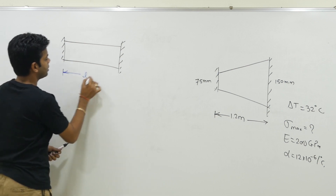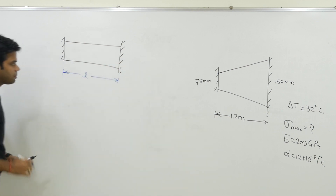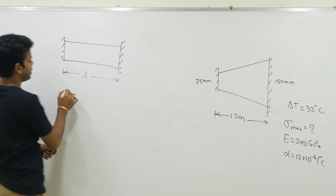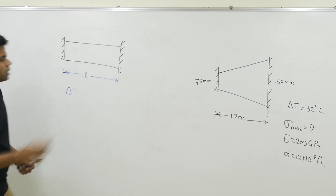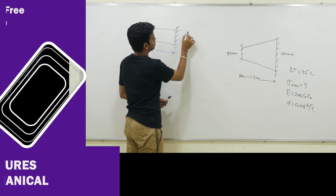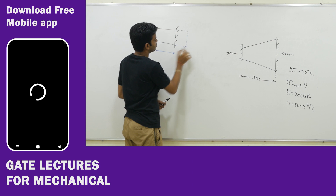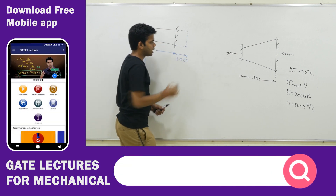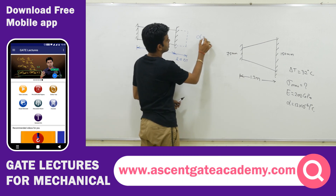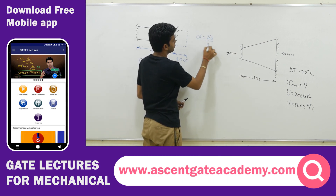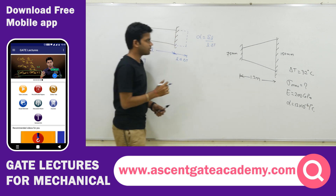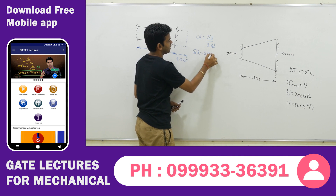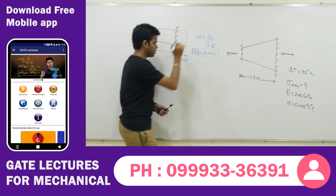Let's suppose the length of this bar is L and the temperature increase is ΔT. If it was free to expand, then the total increase in length is L·α·ΔT. Alpha is the coefficient of thermal expansion, which equals change in length per unit length per degree rise in temperature. So the total ΔL due to ΔT degrees centigrade rise in temperature is L·α·ΔT.